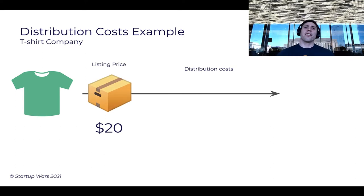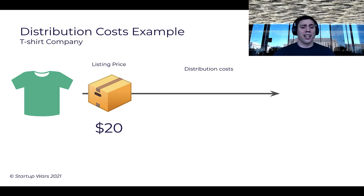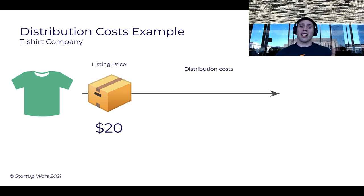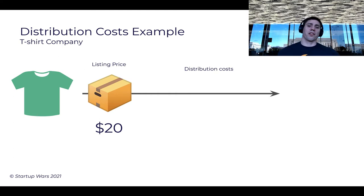And you say to yourself, okay, if each college student is willing to spend $20 for a t-shirt and I sell 10 t-shirts, I'm going to make $200. Is that correct? No, it's obviously not correct. Why? Because there's an actual cost to distributing your product. So let's go over what that cost is going to be.